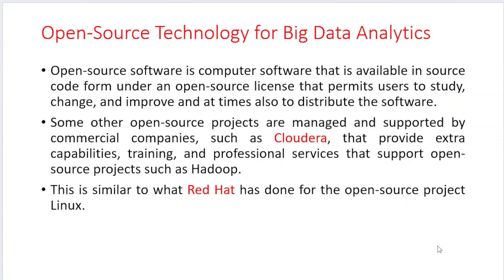These types of software are called open source software, available in source code form. They allow users to study, enhance, and make modifications. However, we should not violate the General Public License rules and degree agreements. Some open source projects are managed and supported by commercial companies — the biggest being Cloudera, which provides extra capabilities, training, and professional services, and supports open source projects such as Hadoop, similar to what Red Hat Linux has done.